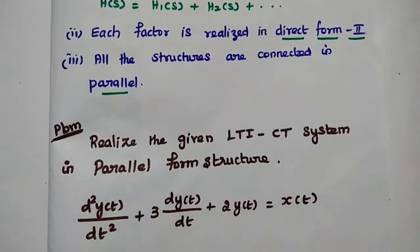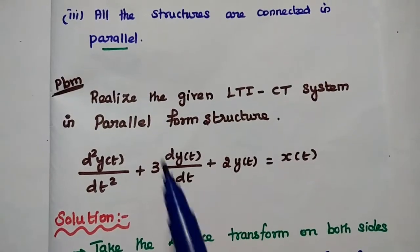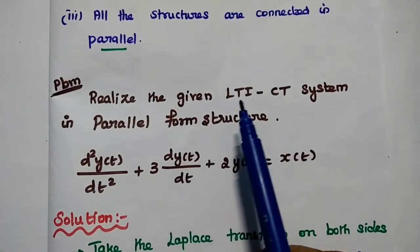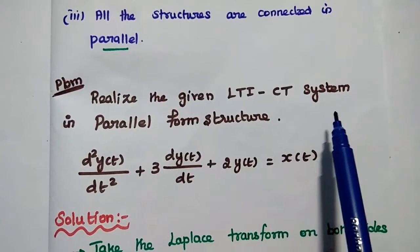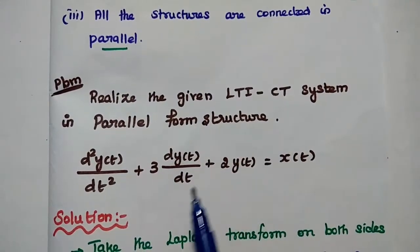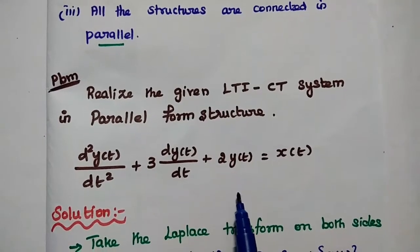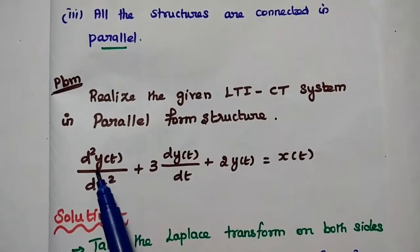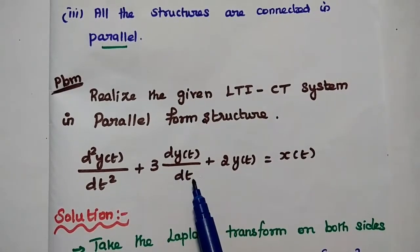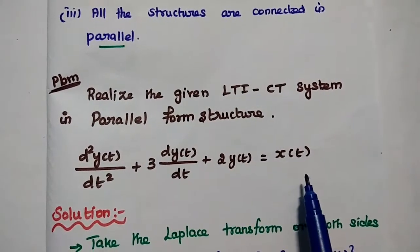Let's solve one problem so you can easily understand the concept. The problem is to realize the given LTI continuous time system in parallel form structure. The system is described by the differential equation: d squared y(t) by dt squared plus 3 dy(t) by dt plus 2y(t) is equal to x(t).